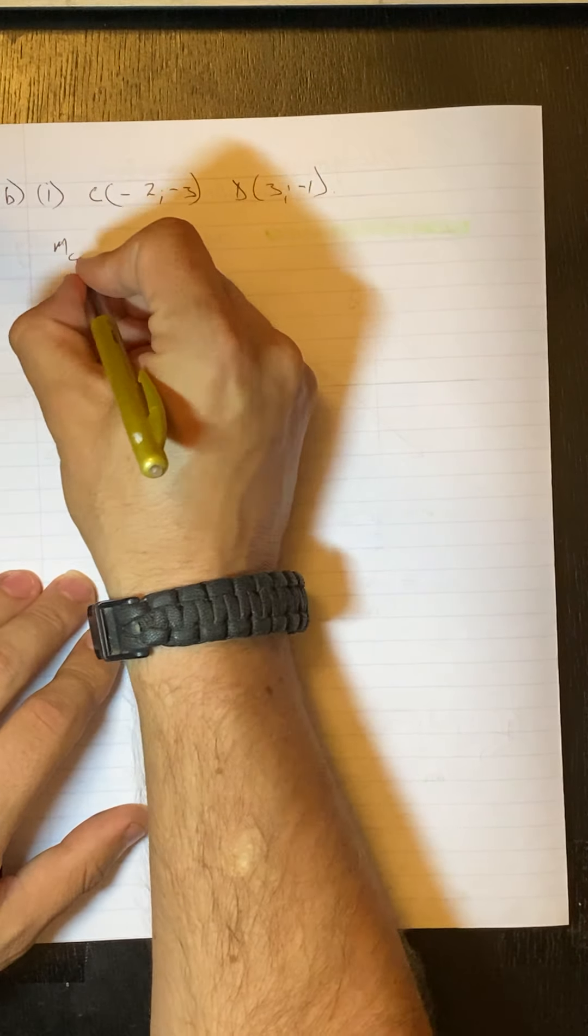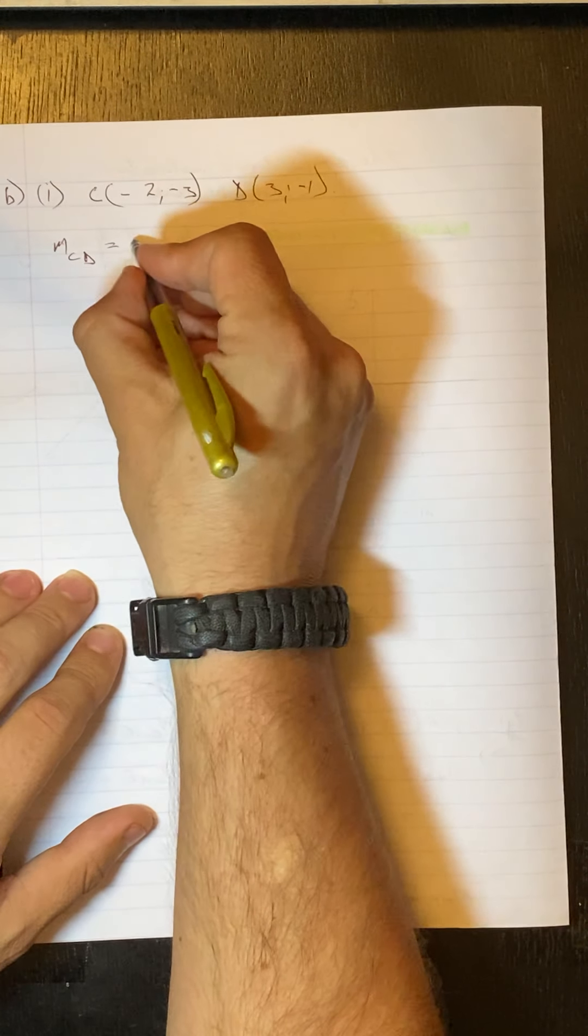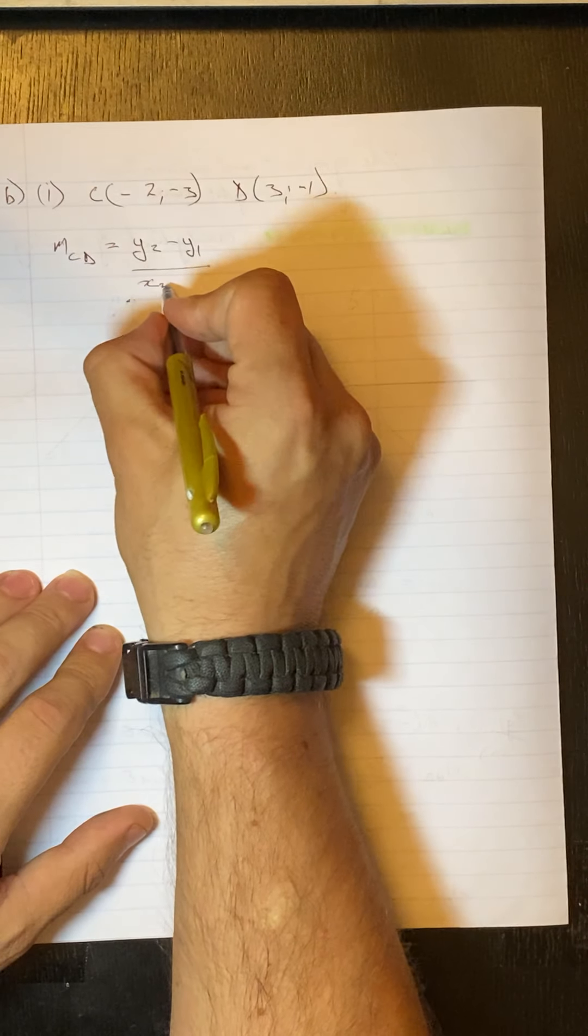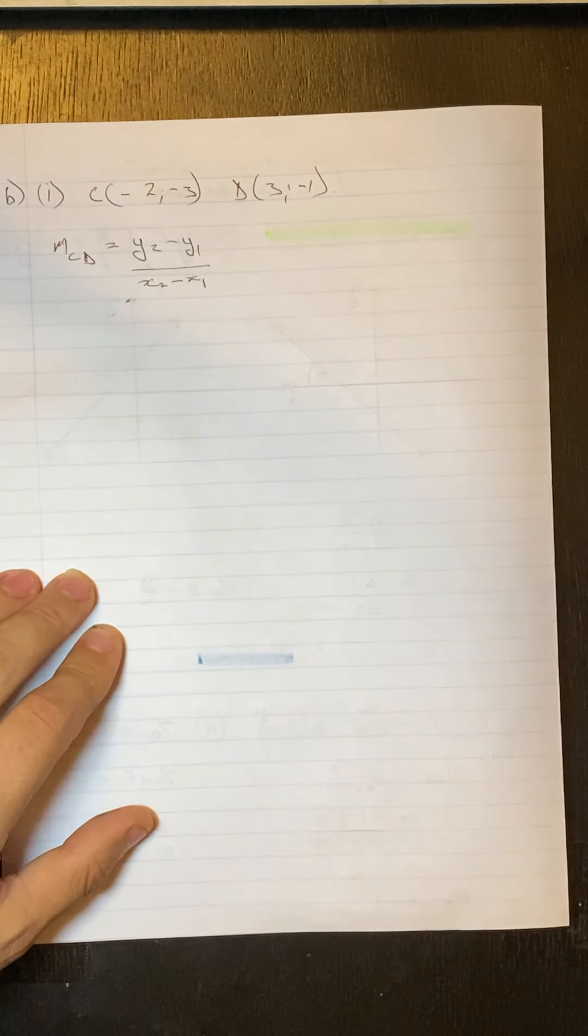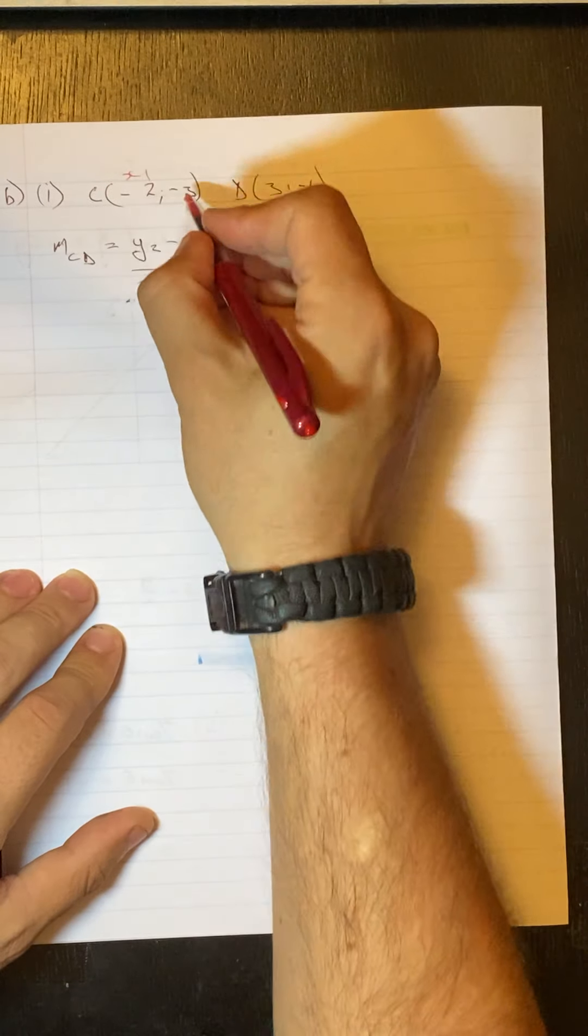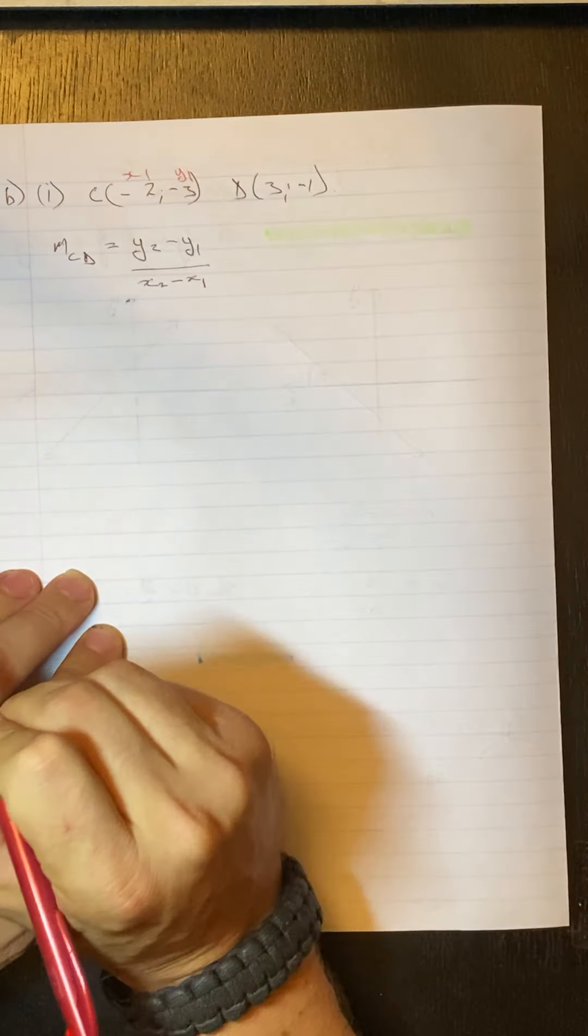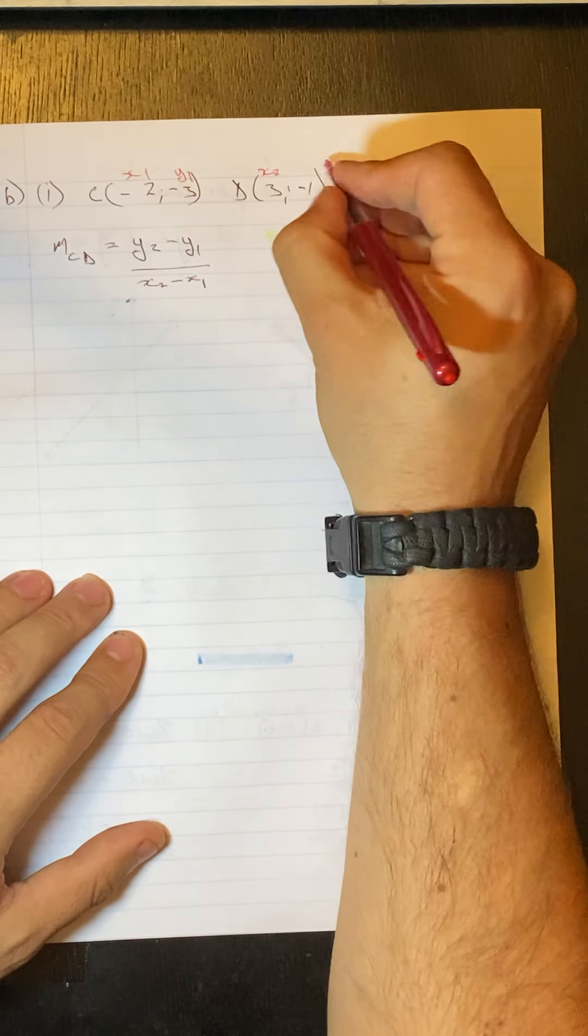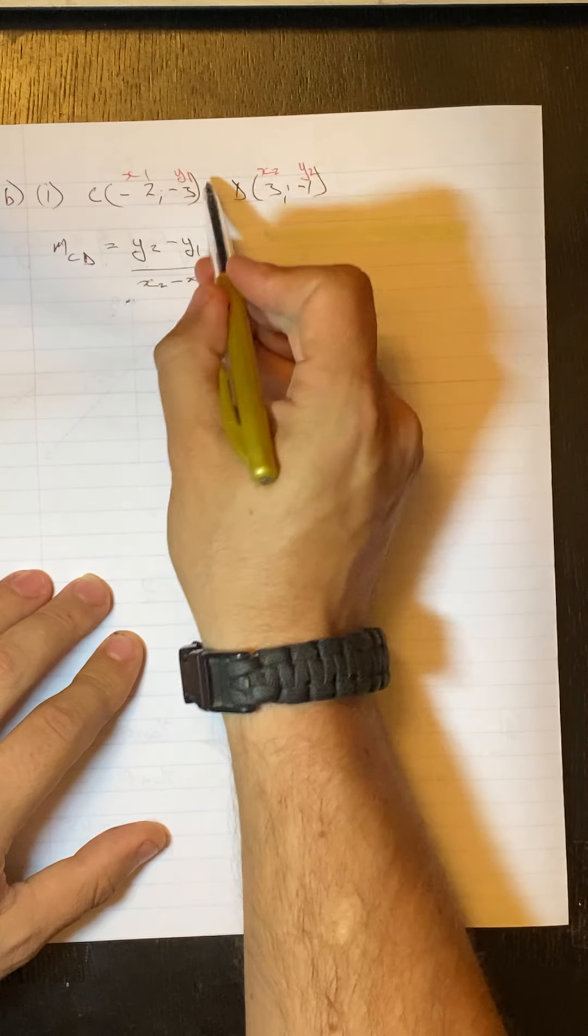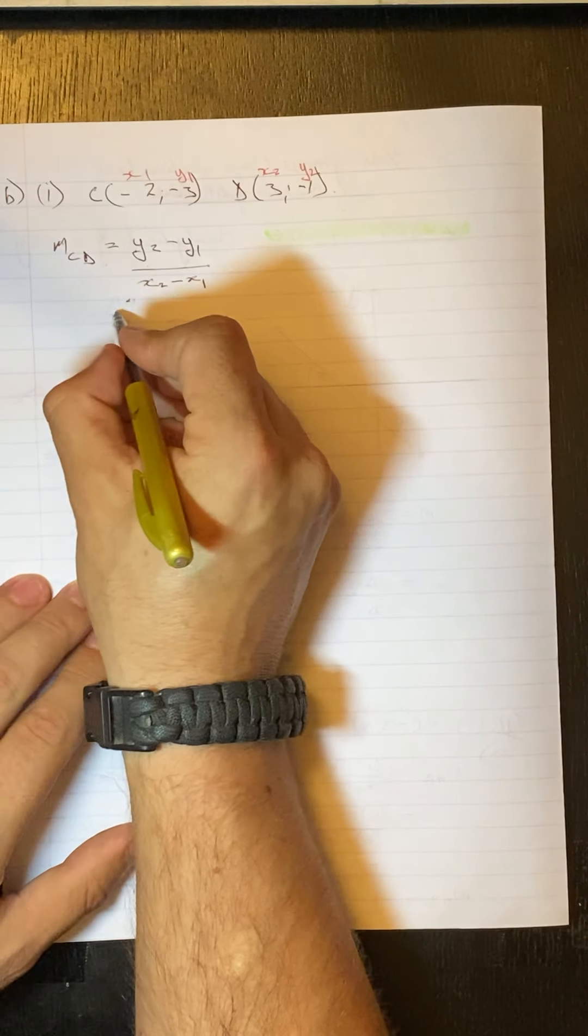So, let's find the gradient, which will be y2 minus y1 over x2 minus x1. Our first point, so this is x1, y1. Our second point, x2, y2. We're just going to substitute these values into the equation.